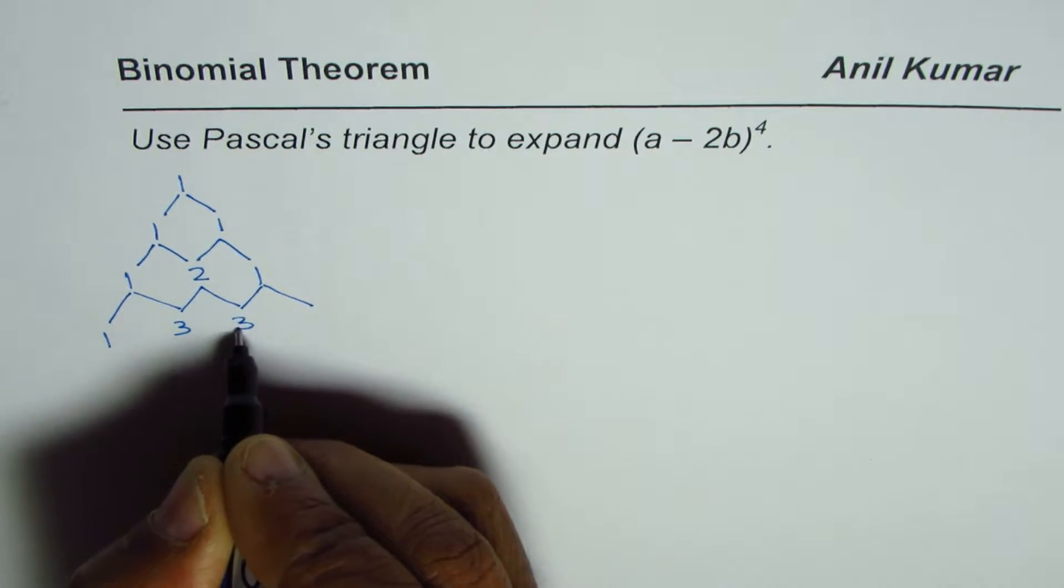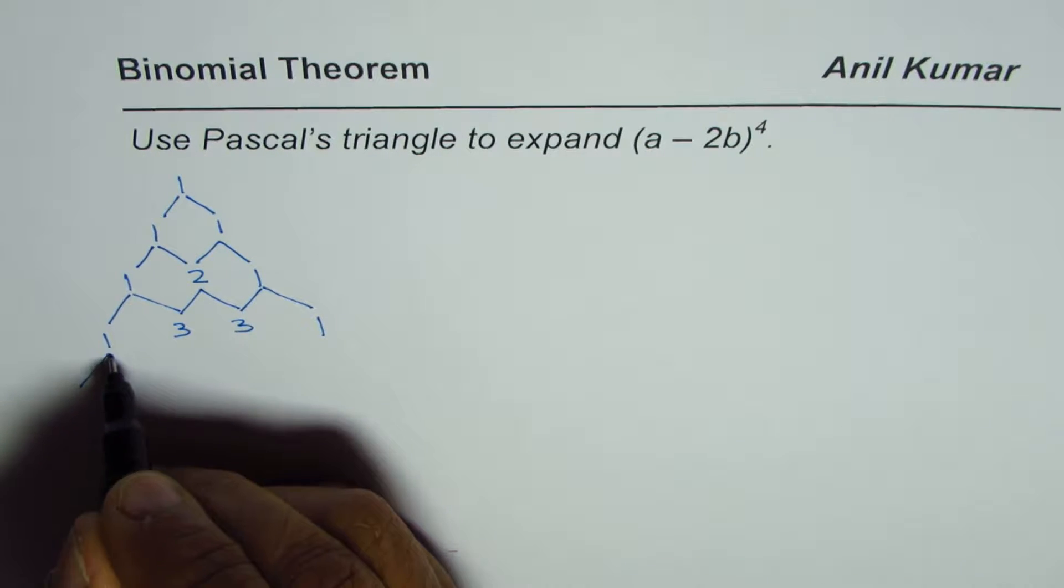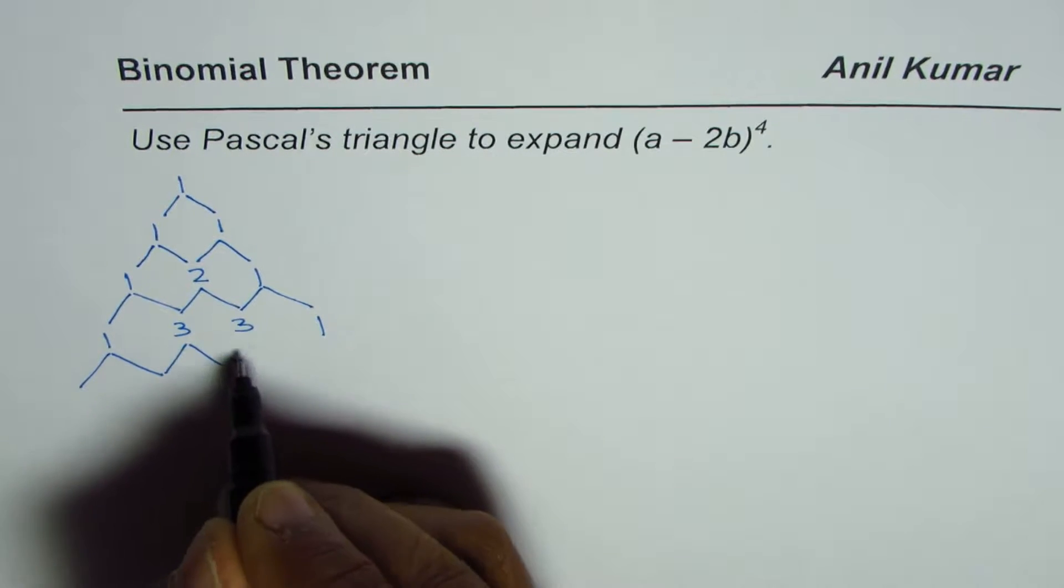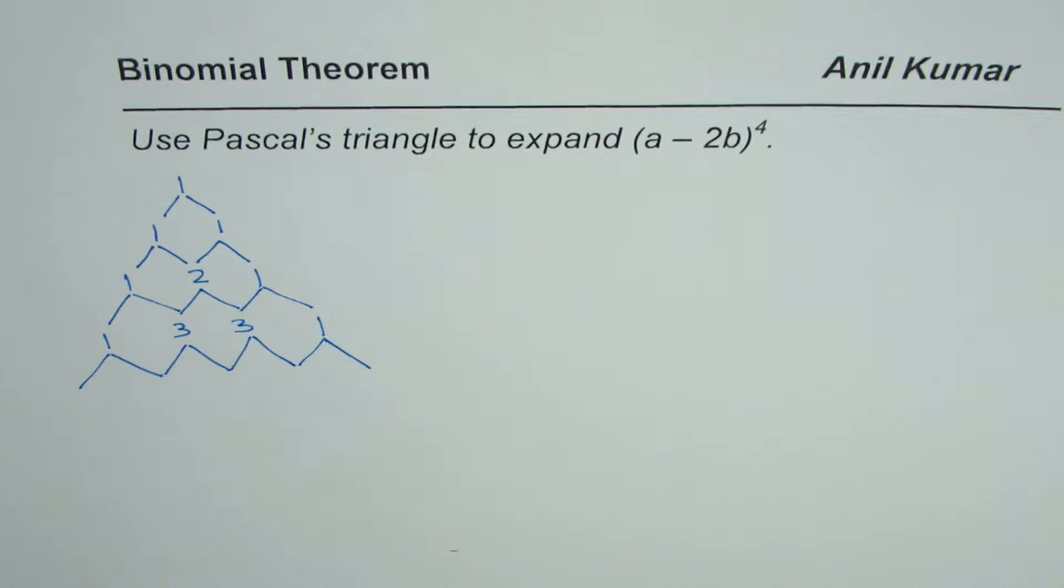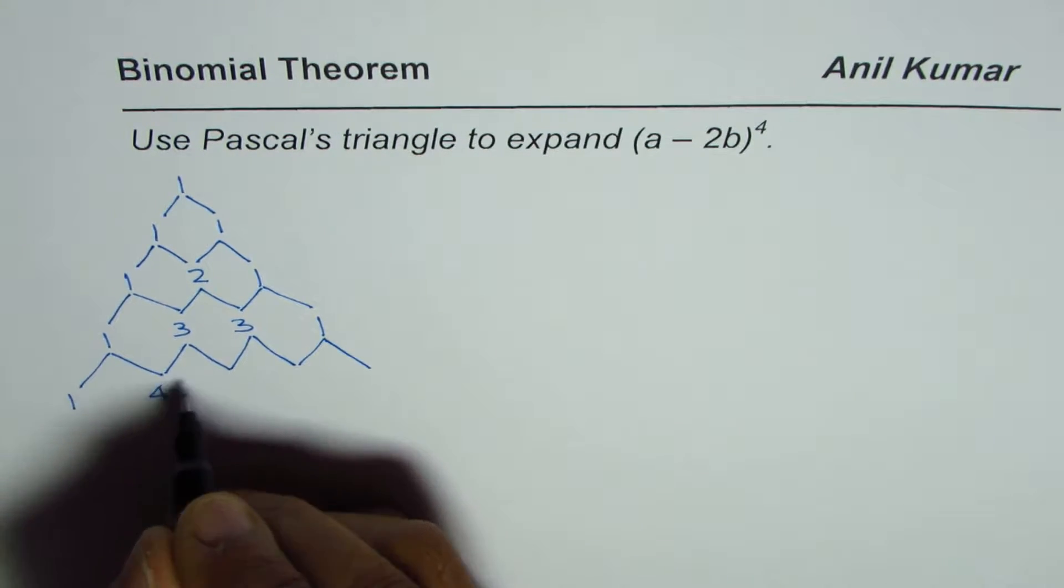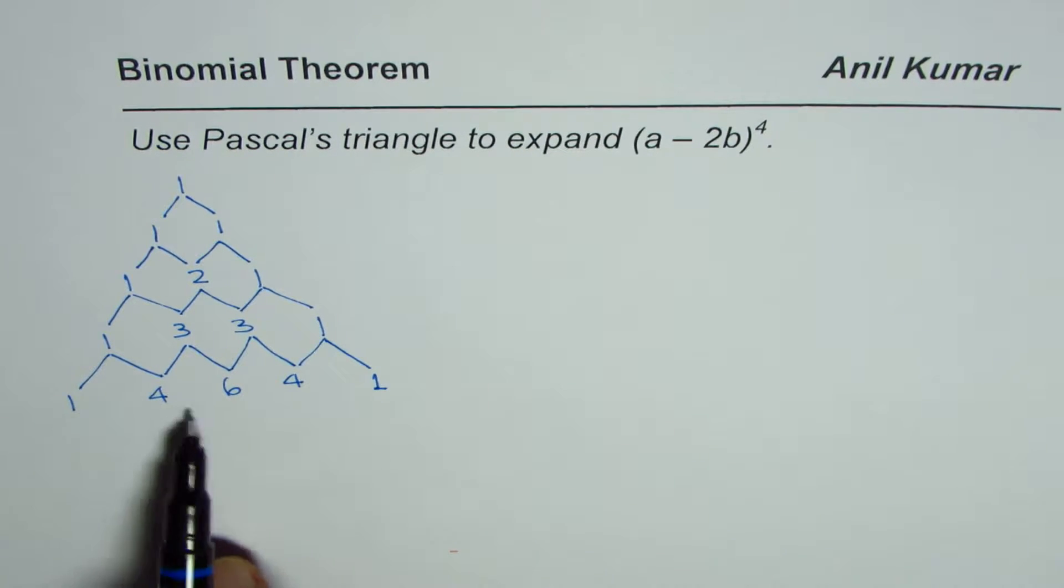2 is 3, 2 plus 1 is 3, and 1. Note the symmetry. For the power of 4, we go up to the fourth row, which will help us expand this binomial. So it is 1, 3 plus 1 is 4, 3 plus 3 is 6, then 4 and 1. These are the